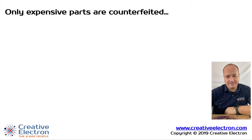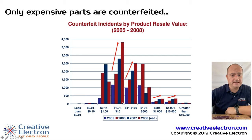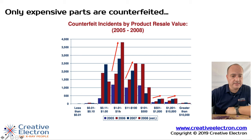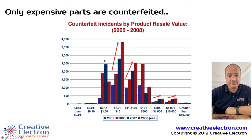Going back to that misconception — 'only expensive parts are counterfeited.' The Department of Commerce report shows the distribution of pricing versus population of counterfeits found. On the left side of the distribution, components under $10 show the largest growth of counterfeit presence. Counterfeiters are criminals and they prey on our attention span — if we're watching expensive items, they'll go after inexpensive ones.